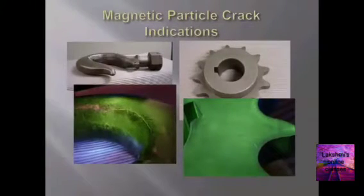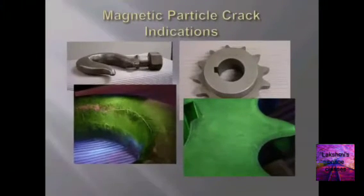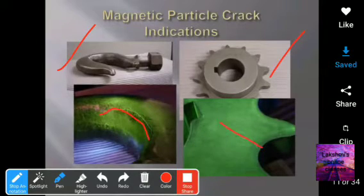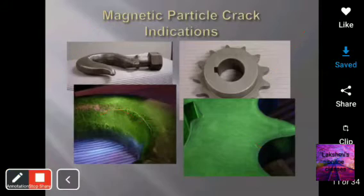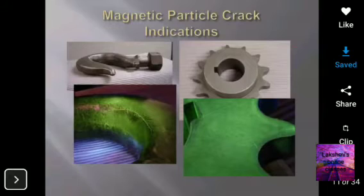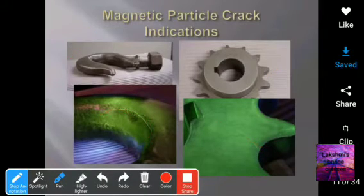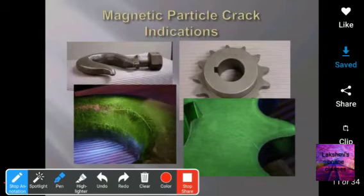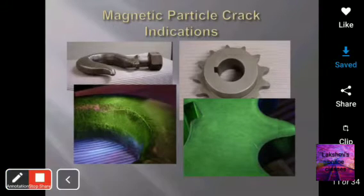Here you can observe a crane hook and a gear blank. The crane hook shows crack indications caused by improper conditions. The cracks are not identifiable with the naked eye, but using magnetic particle testing we can easily identify cracks at the inner surface as well.